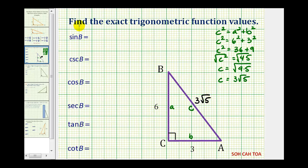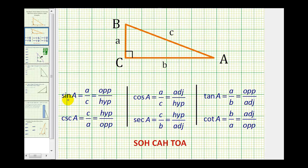Now we can find all six trig function values. For a quick review, the sine of an angle is equal to the ratio of the length of the opposite side to the hypotenuse. And since sine and cosecant are reciprocals, once we find the sine function value, we can take the reciprocal to find the cosecant function value, which is equal to the ratio of the hypotenuse to the opposite side.